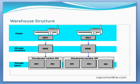The WM is linked to a plant via the storage location. The warehouse has its own organizational structure including storage types, storage sections, bins, and quants.